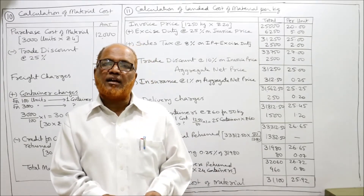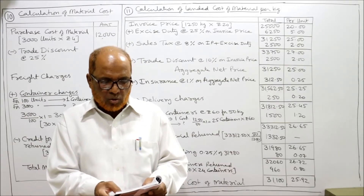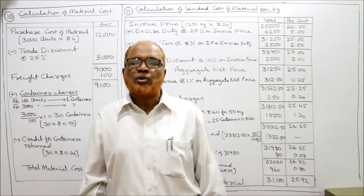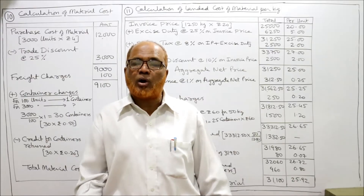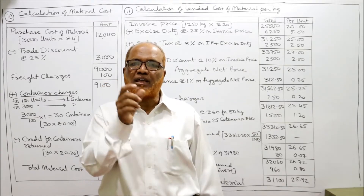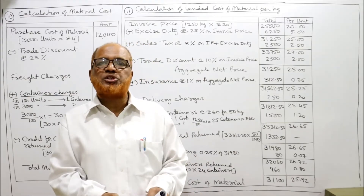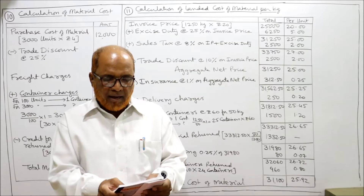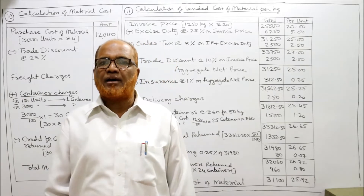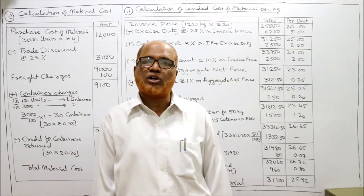Delivery charges are 250 rupees. Container charges are 60 rupees per container for 50 kg of material, so one container holds 50 kg. We are purchasing 1250 kg, so 1250 ÷ 50 = 25 containers. Each container costs 60 rupees, so 25 × 60 gives the container charges. A rebate of 40 rupees per container is allowed if returned within six weeks, which is a normal feature.